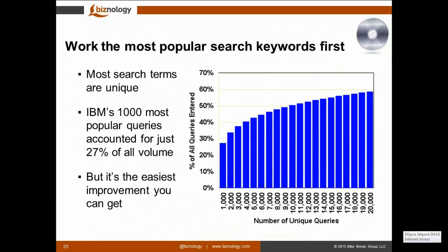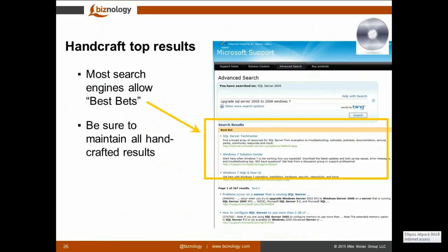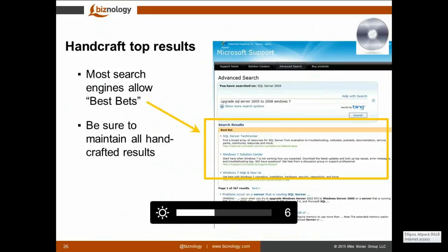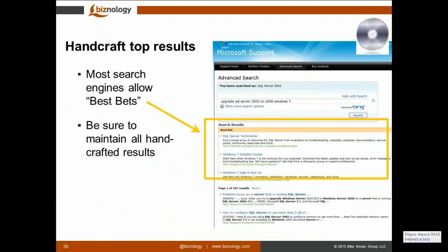If you work on the most popular keywords first — here's an example from IBM — the top 1,000 most popular keywords were only 27% of searches. It's still the easiest improvement: go one by one through the most important keywords and see what results you're getting. Can you make fixes? The easiest way for popular keywords is to handcraft the results — sometimes called 'best bets' or 'suggested matches.' Most search engines support this: you stick the best answer at the top of the screen to ensure the most popular searches always get a good result.